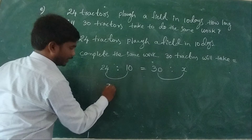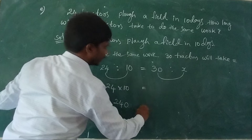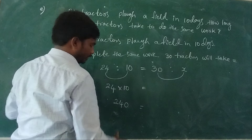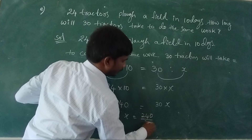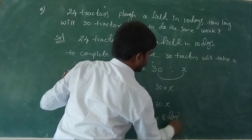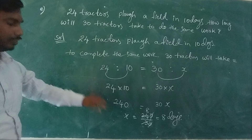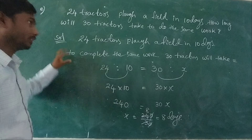In indirect variation, the first two terms product equals the second two terms product. 24 into 10 is equal to 240 — that is the total work done. Same: 30 into X equals 240, so X equals 240 divided by 30, which gives 8 days. 30 tractors complete the same work in 8 days.